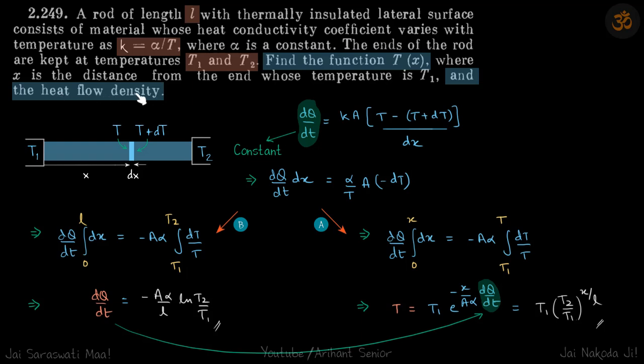This is nothing but heat current dQ/dt. Quite obviously, since k is variable and dependent on temperature, we have to consider an element at which we have to assume the temperature is T, such that we can write k for that element alone.